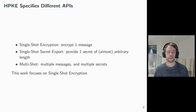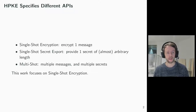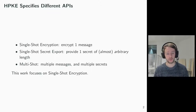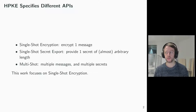The HPKE standard exposes three interfaces. The single shot encryption interface encrypts one message, just as you would expect from public key encryption. The single shot secret export interface provides one shared secret of almost arbitrary length. It can be used in a higher level application. This is interesting because KEMs usually output a fixed size shared secret, and so this API provides a secure way to expand this to an almost arbitrary length — almost because in practice the specific key derivation functions have limits.